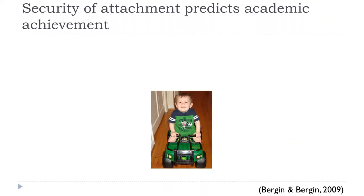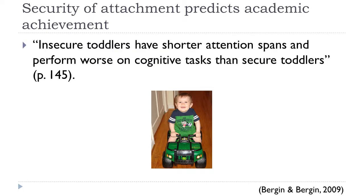One finding related to how attachment predicted academic achievement: it's been found that insecure toddlers have shorter attention spans and perform worse on cognitive tasks than secure toddlers. So the type of attachment that young children have can affect their cognitive abilities.